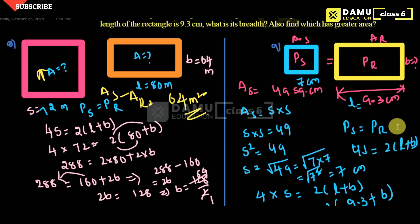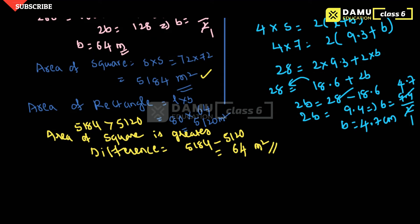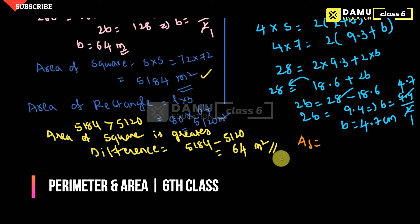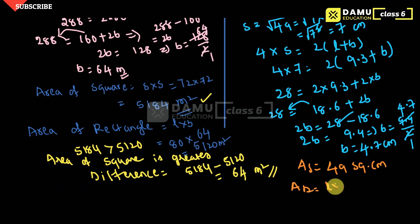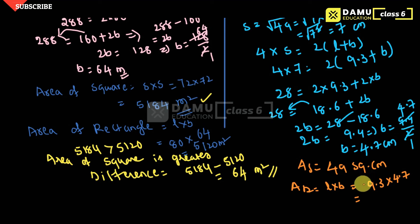So breadth equals 4.7 centimeters. We also have to find the areas of both. Area of square is already given as 49 square centimeters. For area of rectangle equals length into breadth, so length is 9.3 and breadth is 4.7. So 9.3 into 4.7 gives 43.71 square centimeters. So 49 is greater.